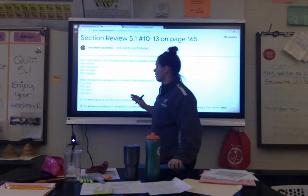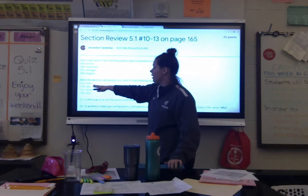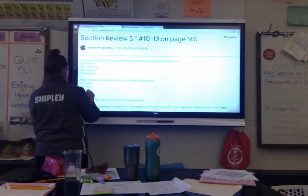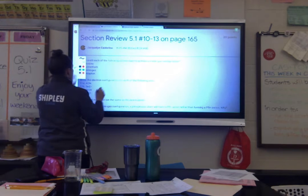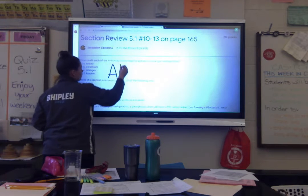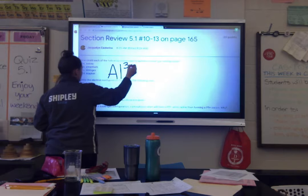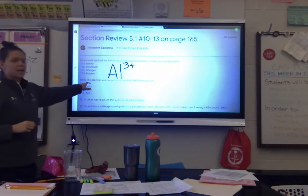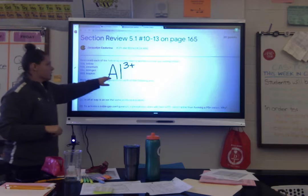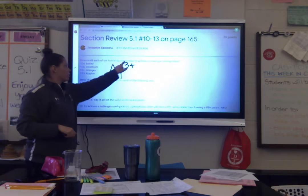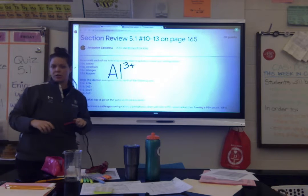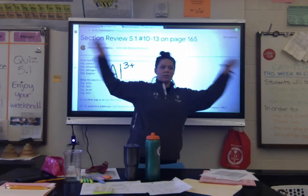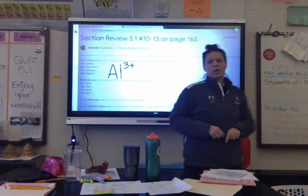Now number 11. We're going to start with aluminum 3 plus — written as Al³⁺. It looks a little different on Google Classroom because we can't have a superscript, but this is how it's meant to be written: Al with a 3 plus superscript.